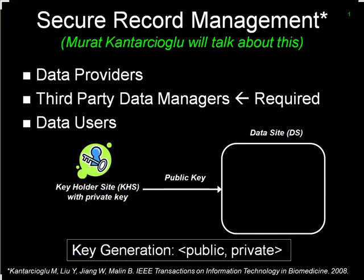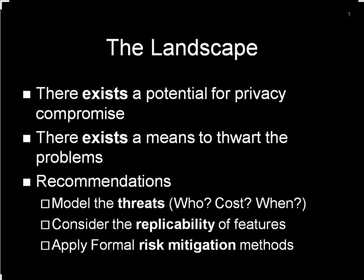Another approach — which Marat will discuss — is to not publish aggregates or simply suppress features, but instead encrypt all the data in its most specific form and run queries over encrypted pieces of information. Stepping back: the landscape shows there exists potential — multiple potentials — for privacy compromise. But all that means is that there are models of attack. It doesn't mean these things are likely to occur or that they will occur. Some cost far more to execute than others.